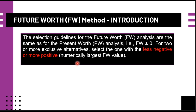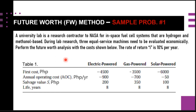We now proceed to Sample Problem 1, which is related to our previous lecture on the present worth method — but here we use the future worth method. A university lab is a research contractor to NASA for in-space fuel cell systems that are hydrogen and methanol based. Three equal-service machines need to be evaluated economically using the FW method, with an interest rate i = 10% per year. The alternatives are electric-powered, gas-powered, and solar-powered machines.